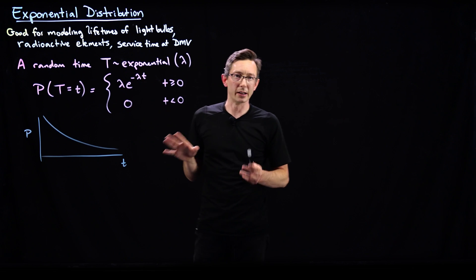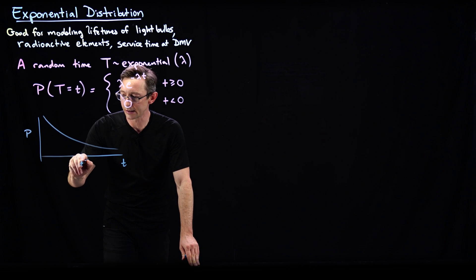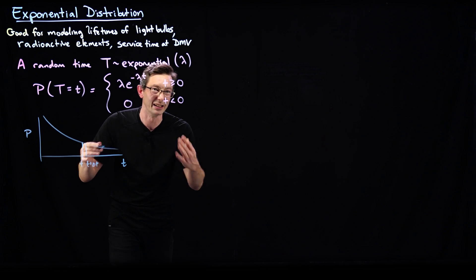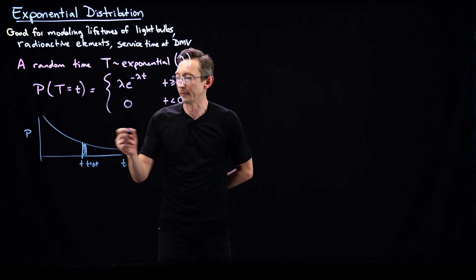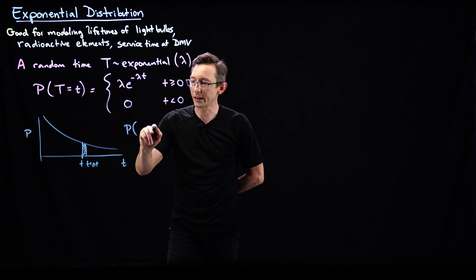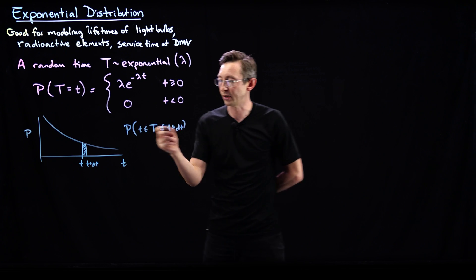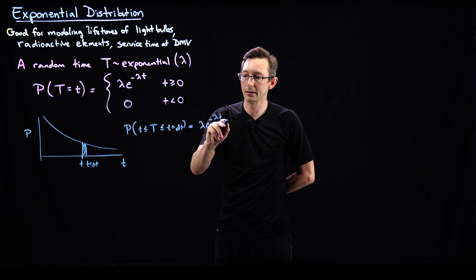Here we have this exponentially decaying distribution, where the y-axis is probability and the x-axis is little t, time. For some little time t here, the chance of failing between t and t plus delta t — the probability of failing in this specific time in the future — is lambda e to the minus lambda t times dt.